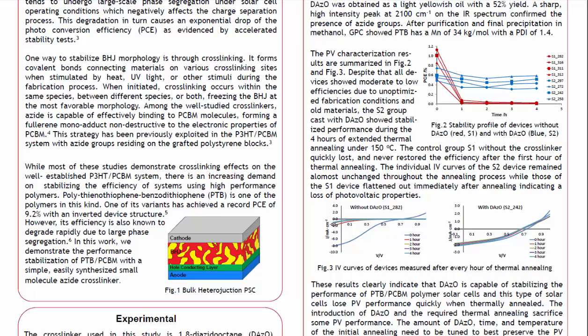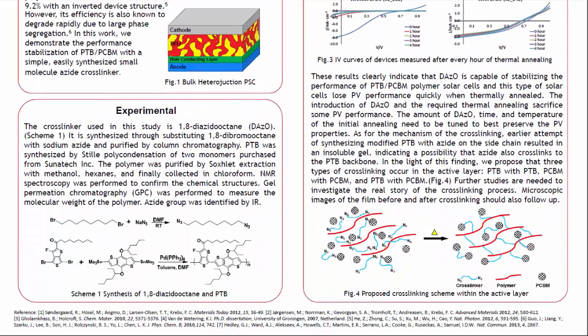In this work, we demonstrate the performance stabilization of PTB-PCBM with a simple, easy-synthesized small molecule azide crosslinker. The crosslinker used in this study is 1,8-diazidooctane. It is synthesized through substituting 1,8-dibromooctane with sodium azide and purified by column chromatography. PTB was synthesized by Stille polycondensation of two monomers purchased from Sunitec. The polymer was purified by Soxhlet extraction with methanol, hexanes, and finally collected in chloroform.